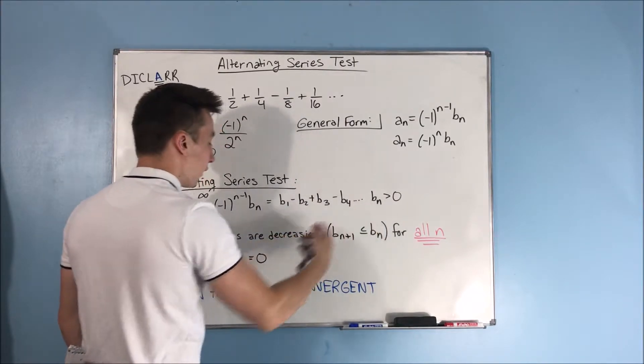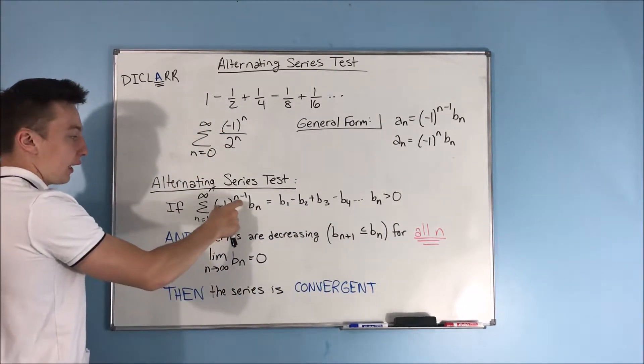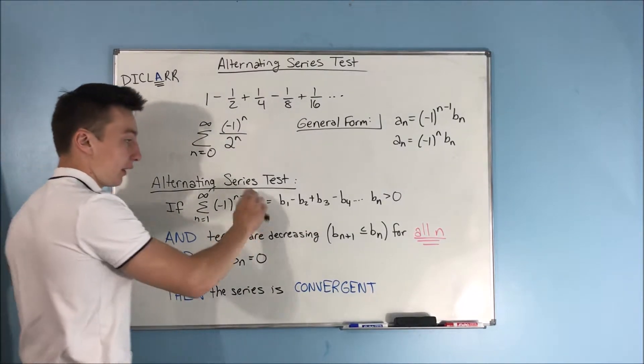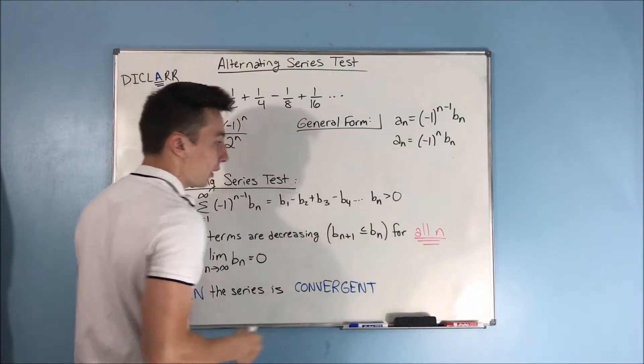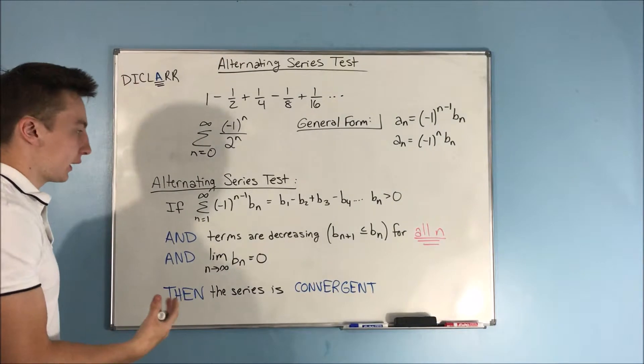Where b sub n is greater than 0, right? That's the only negative part. So, your b sub n is everything that's not negative, so it should be greater than 0. That's how this test works.